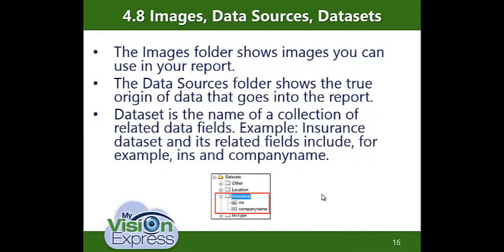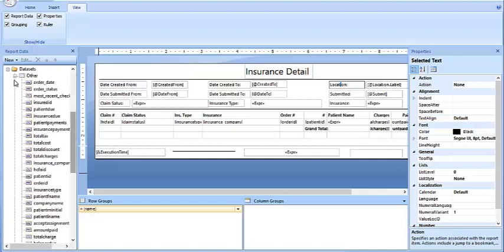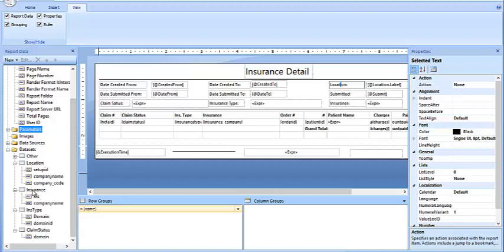Topic 4.8 — Images, Data Sources, and Data Sets. The Images folder shows images you can use in a report. The Data Sources folder shows the true origin of data going into the report. A Data Set is the name of a collection of related data fields — for example, the Insurance Data Set is defined by two fields: INS for Insurance and Company Name. Going down to Data Sets and clicking on it, we can see the Insurance Data Set defined by INS and Company Name.